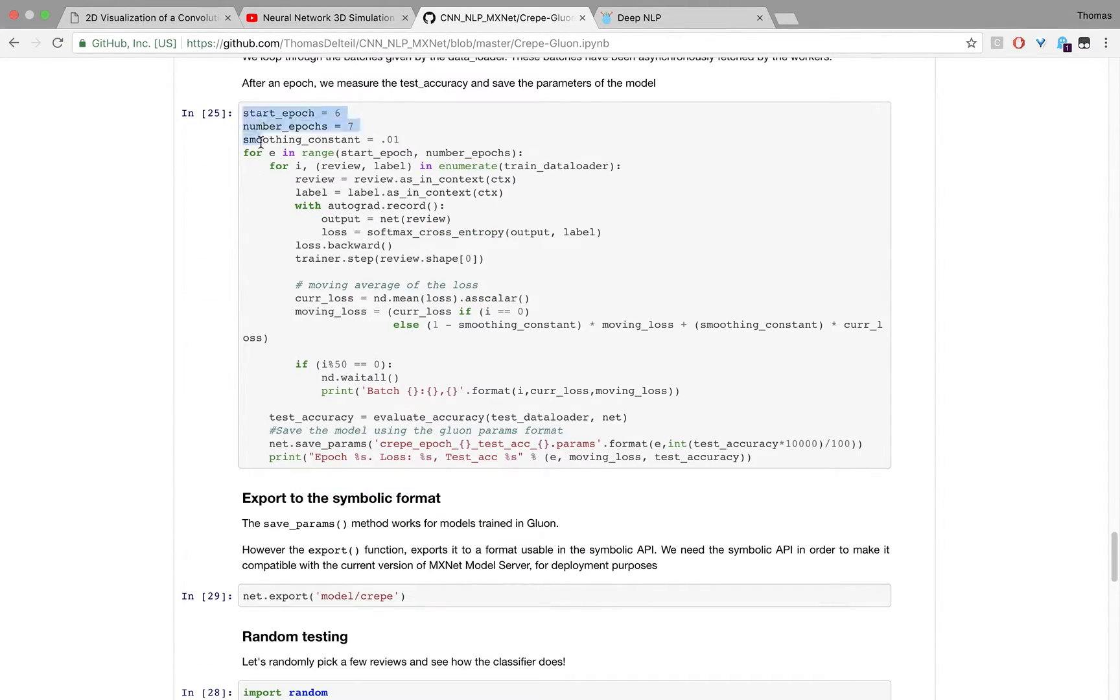For the training, for the number of epochs that we have, we get the data—the review and the label of the review—from the data loader and load them onto the GPU.